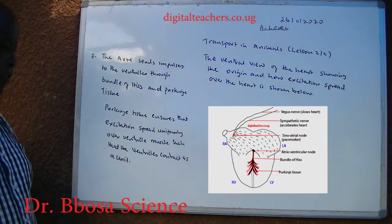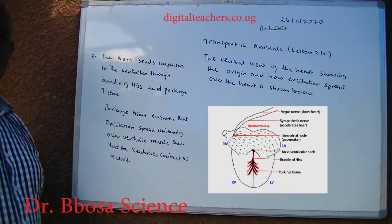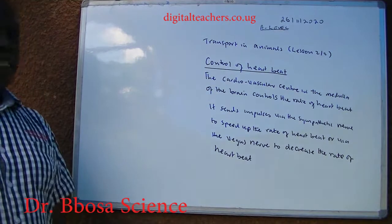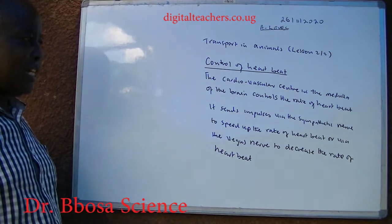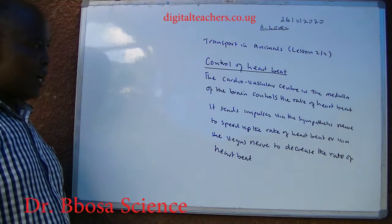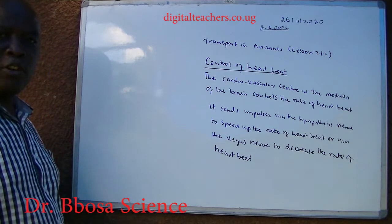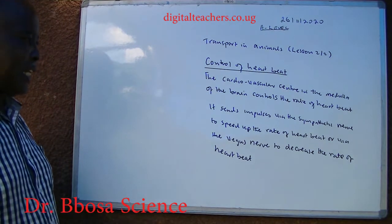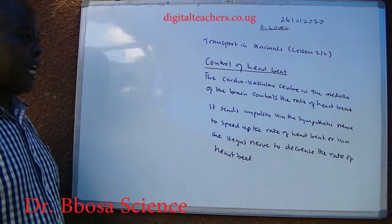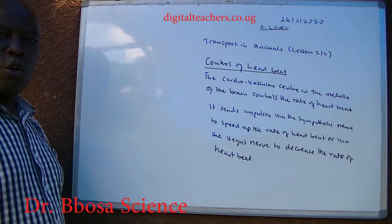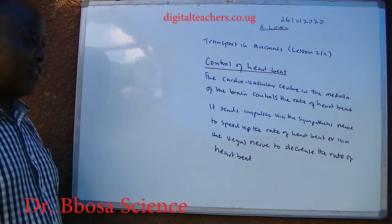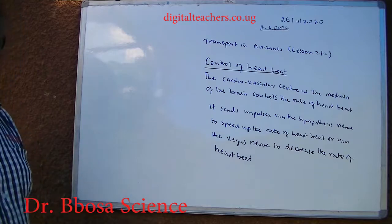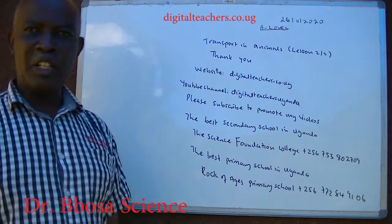The control of heartbeat: the cardiovascular center in the medulla of the brain controls the rate of heartbeat. It sends impulses via the sympathetic nerve to speed up the rate of heartbeat, or via the vagus nerve to decrease the rate of heartbeat. Thank you so much for listening to this video.